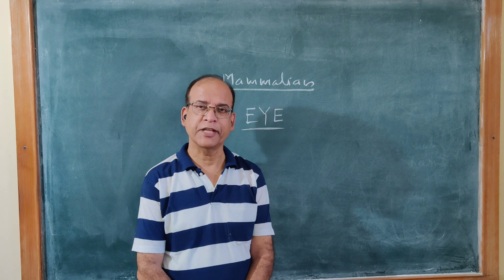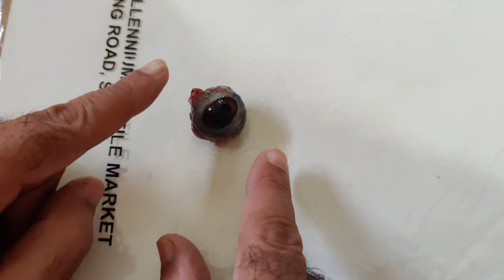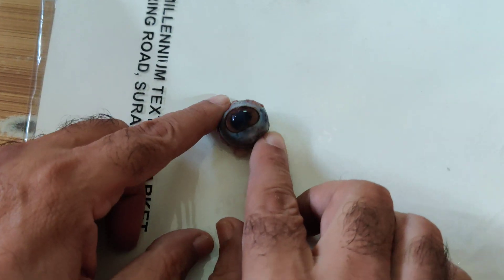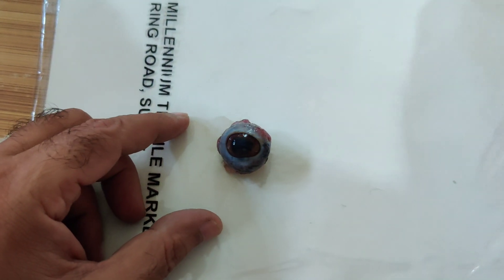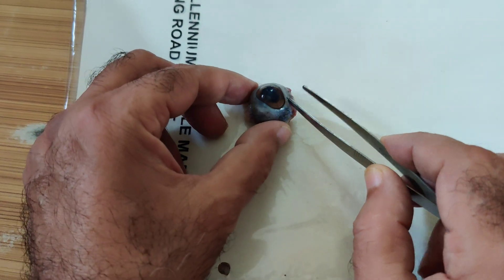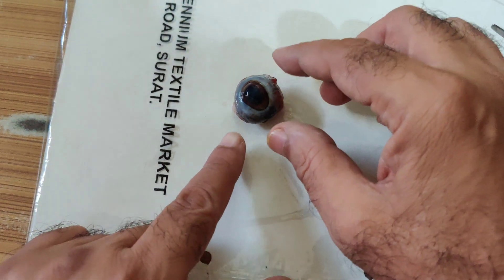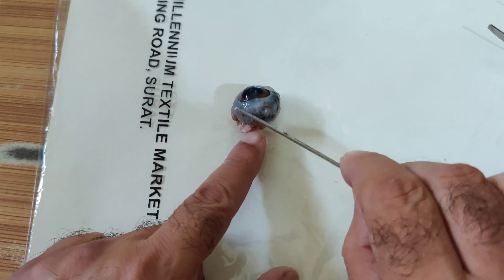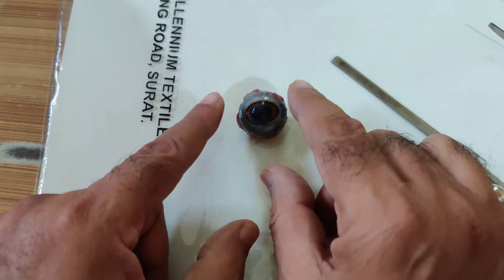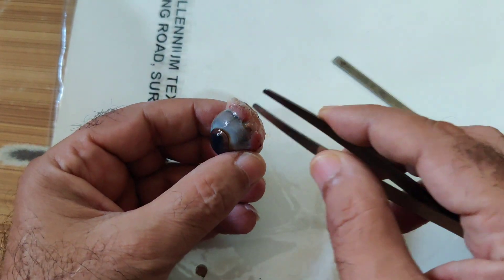Let us start the dissection. This is a mammalian eye. You can see this front part — this is the cornea. This structure is the cornea, and this white part is the sclera. The sclera and cornea form the outer layer of the eye.